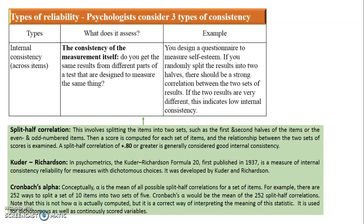The third and most important approach — which we will discuss in detail — is Cronbach's alpha. It is essentially a split-half correlation, but the key difference is that it considers the mean of all possible split-half correlations for a set of items. For example, with 10 items there are 252 ways of splitting them into two sets of five, and Cronbach's alpha is the mean of all 252 possible split-half correlations. This makes it objective, with no subjectivity involved. It can be used for dichotomous as well as continuous scale variables.